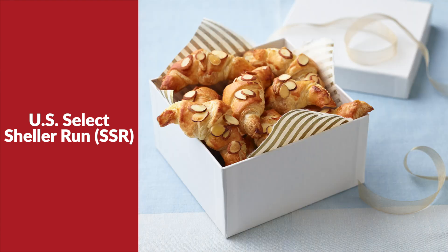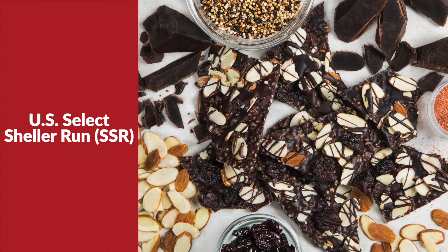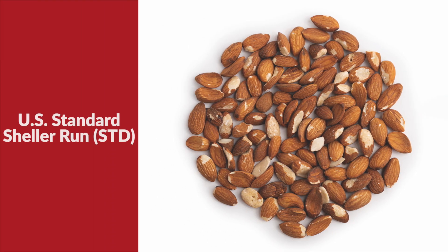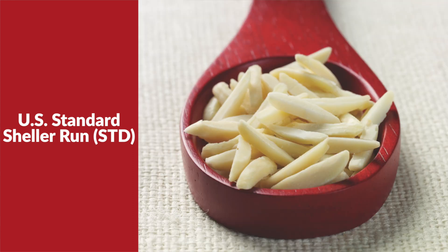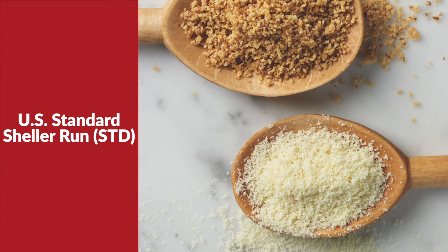U.S. Select Scheller Run is also optimal for grinding, roasting, dicing, blanching, and slicing. U.S. Standard Scheller Run is best used when a higher level of kernel defects are not a concern. Blanching, dicing, grinding, and/or paste are the best uses for this grade of almond.